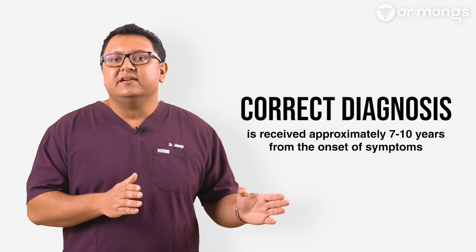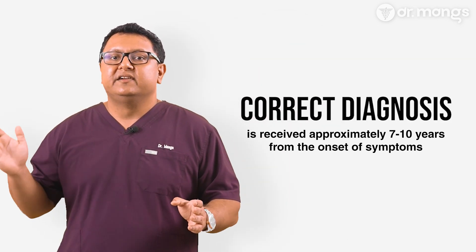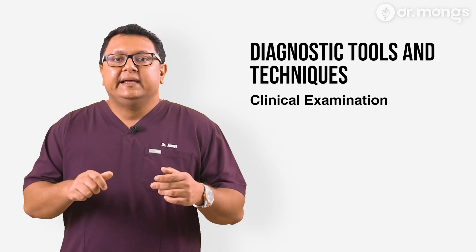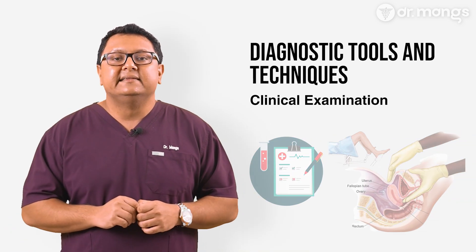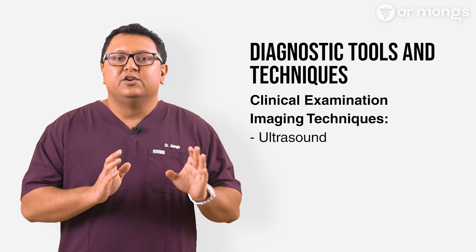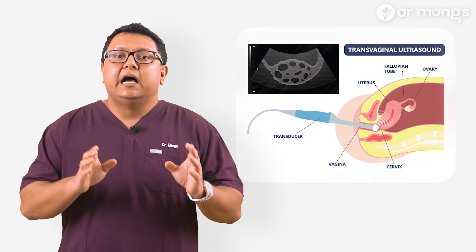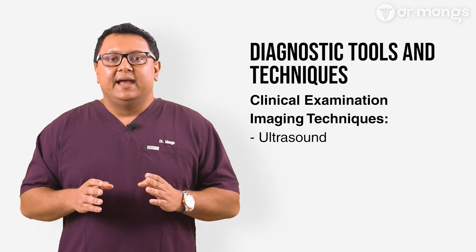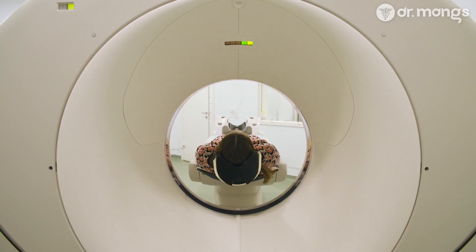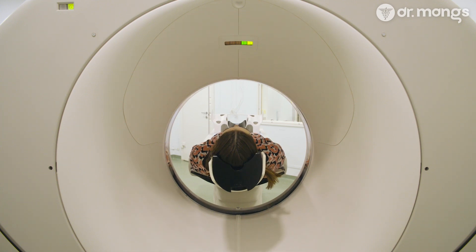Diagnosing endometriosis can be challenging due to its wide range of symptoms and the overlap with other conditions like IBS or PID. On average, it can take 7 to 10 years from the onset of symptoms to receive a correct diagnosis. Your doctor will begin with a detailed medical history and a pelvic examination to check for any abnormalities. Transvaginal ultrasound is often used to detect ovarian cysts; however, it may not always detect smaller or more superficial lesions. MRI is a more advanced tool that can provide detailed images of the pelvic organs and help in assessing the extent of deep infiltrating endometriosis.